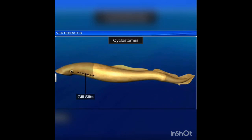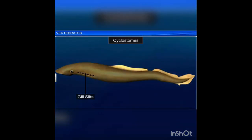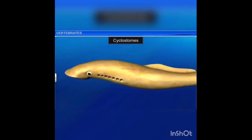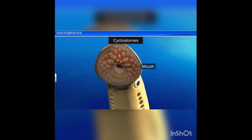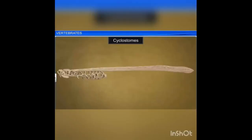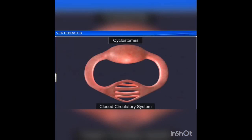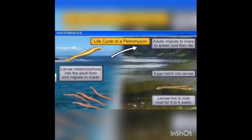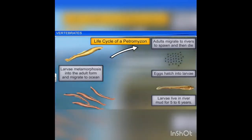Body is slender and eel-like, bearing 6 to 15 pairs of gill slits for respiration. The mouth is circular, without jaws, and suctorial. Cranium and vertebral column are cartilaginous. The heart is two-chambered and circulation is of closed type. Cyclostomates are marine but migrate to fresh waters for spawning. After spawning, within a few days, they die. The larvae, that is the ammocoetes larvae, after metamorphosis, return to the ocean.